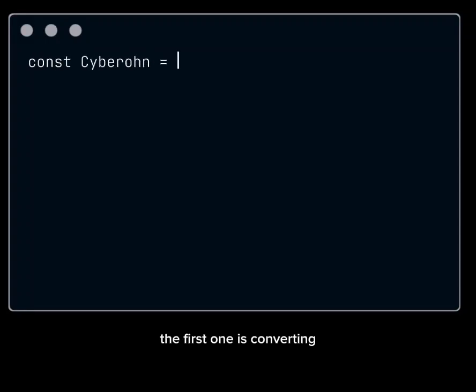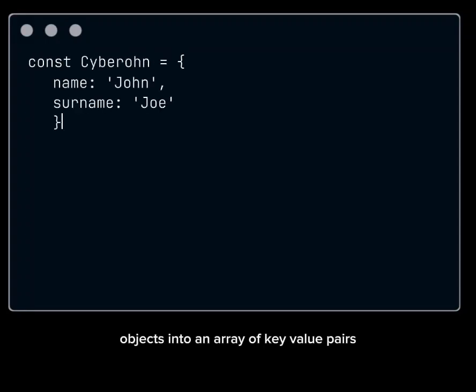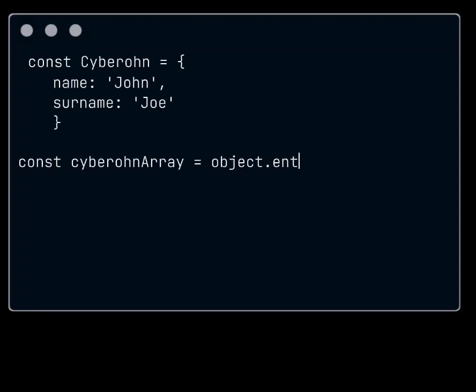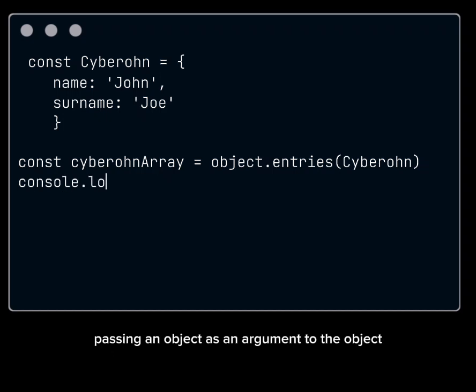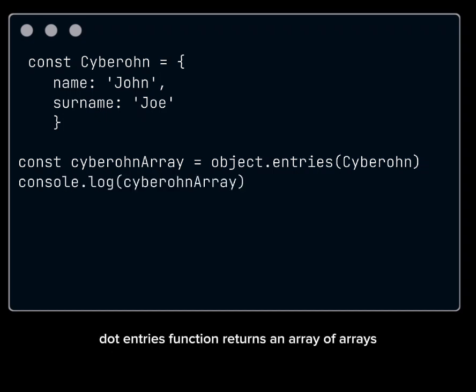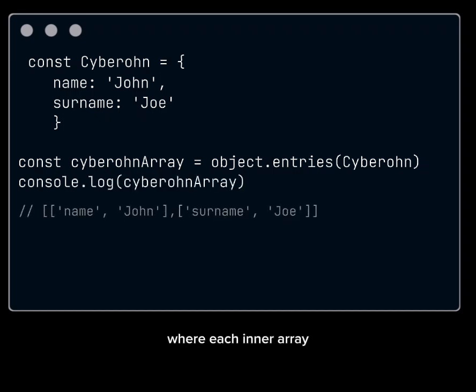The first one is converting objects into an array of key-value pairs. Passing an object as an argument to the Object.entries function returns an array of arrays, where each inner array is a key-value pair of each item in the object.